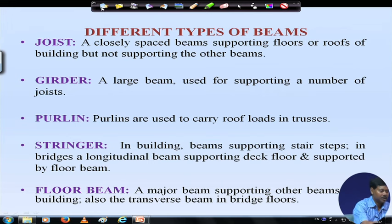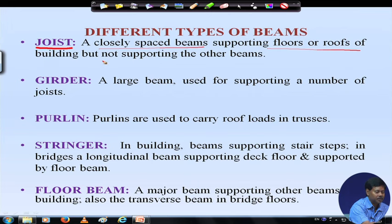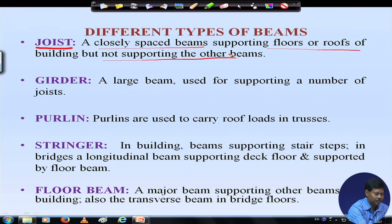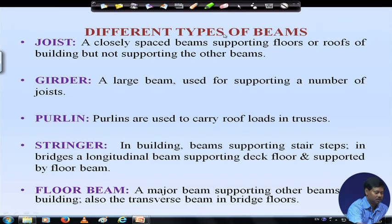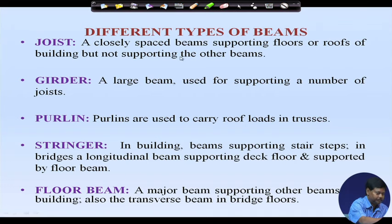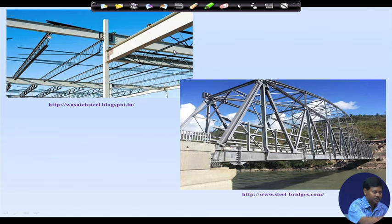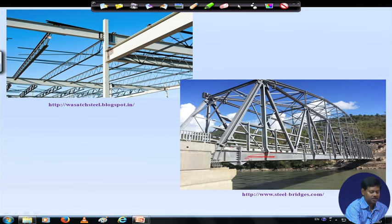Though we call this a beam, these beam members are named in different ways at different places. Like joist — a closely spaced beam supporting floors or roofs of a building but not supporting other beams — this is called a joist. Girder is a large beam used for supporting a number of joists. In the previous example, we can see this is called a girder, this is supported by the cross beam, this is supported by the secondary beam.